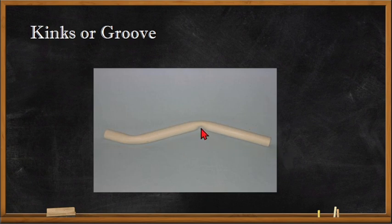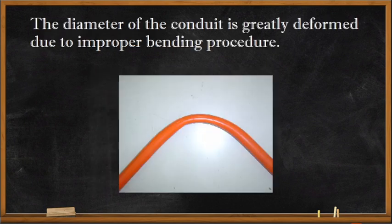If it is a metallic conduit, the kink will also cause the protection of the conductor to be scraped out, so our conductor will be damaged because of the kink. If this happens, never use or install this conduit.